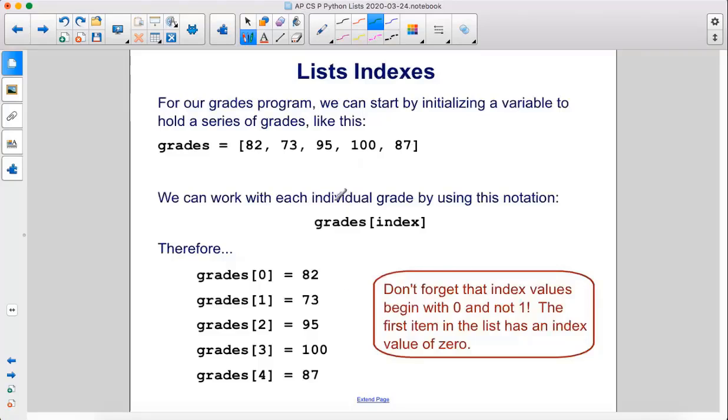For our grades program, we can start by initializing a variable to hold a series of grades like this. Grades equals square brackets, and then we have five grades like that. We can work with each individual grade by using this notation. So, you have the list name, then square brackets, and then you include the index value of the compartment you are trying to access.